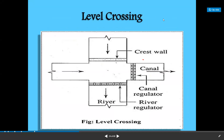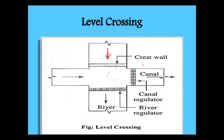Looking at the sketch of the level crossing: the river flow is in one direction and the canal is flowing in another direction. For regulating the canal flow, one canal regulator is provided — a cross regulator — so we can regulate the flow in the canal. Similarly, we need to construct one regulator for the river flow, called the river cross regulator, which is essentially a gate or shutter.